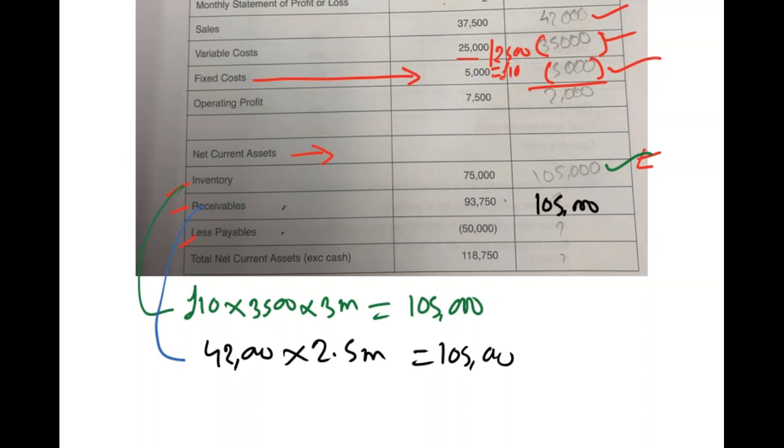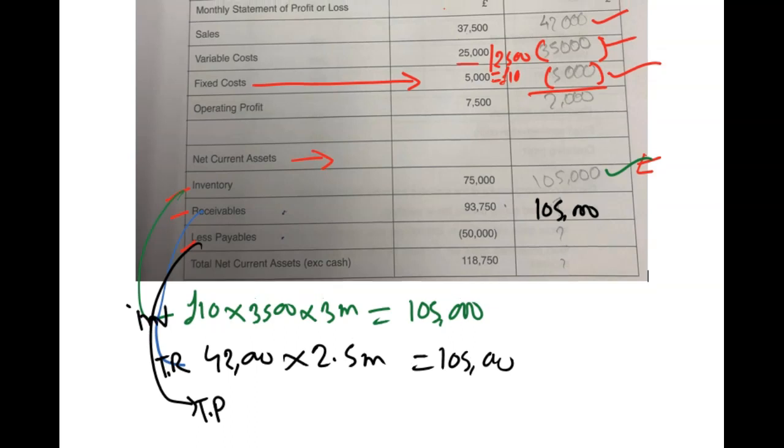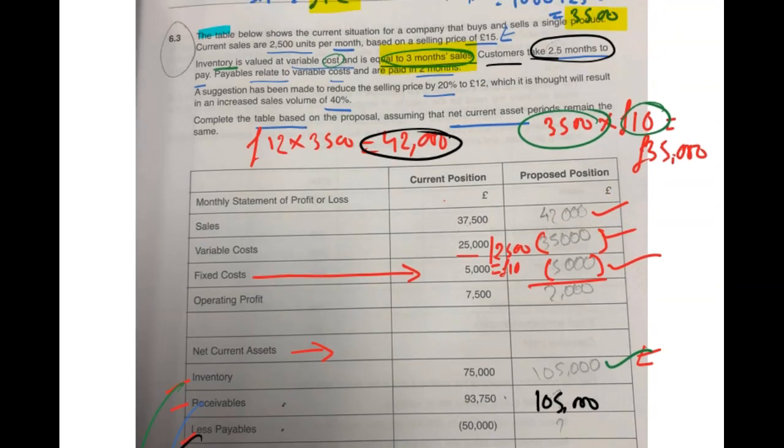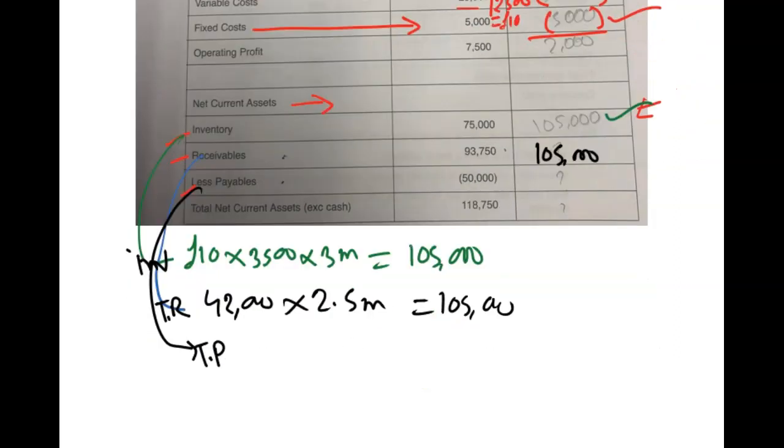That is going to be your trade receivables, because two and a half months of your sales is a credit due. Let's talk about trade payables - that's the last one. Let's try to find our trade payables. Payables relate to variable cost, which is £10, remember, and are paid in two months. Two months and variable cost, remember. Our variable costs are £10.